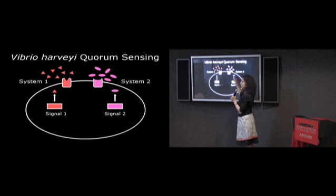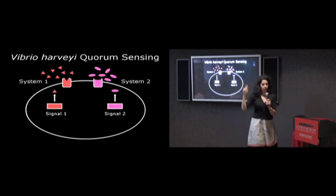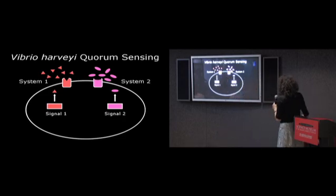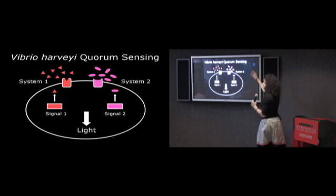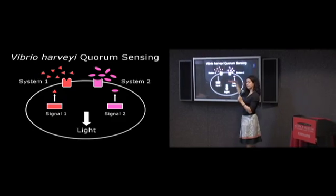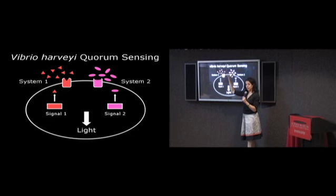But running in parallel with that system, there was another enzyme that made a different molecule that got released with a partner receptor on the surface. And then together, this information from these two different chemicals tells the cell to turn on and off light based on whether these two molecules are there.